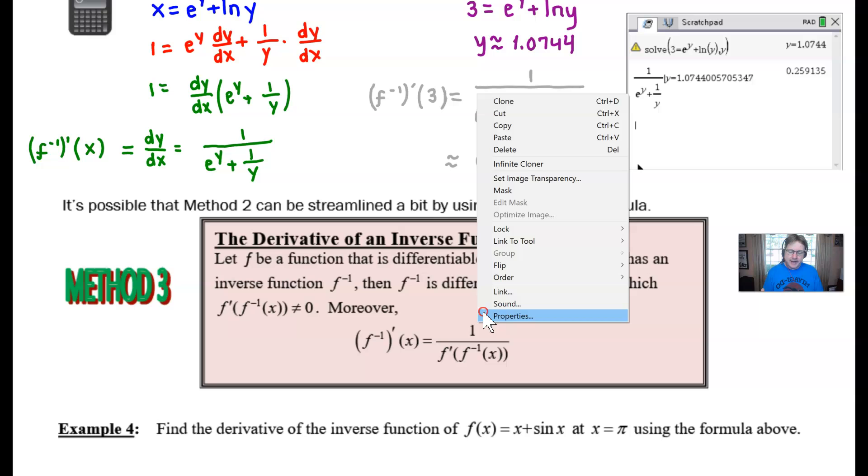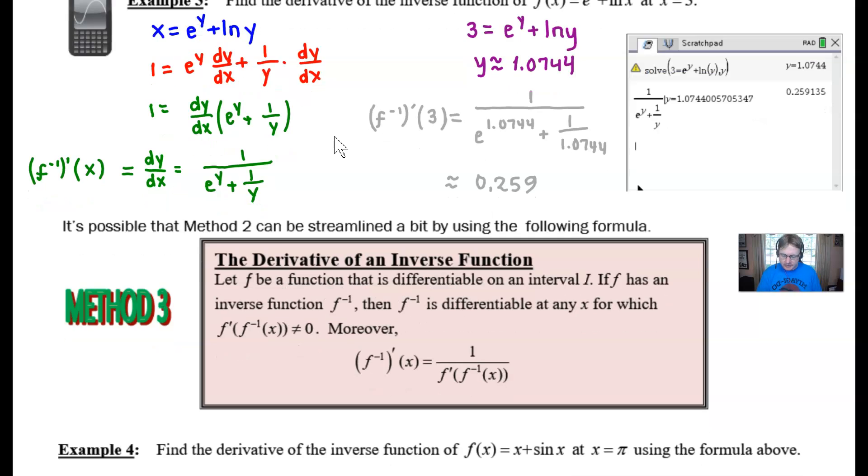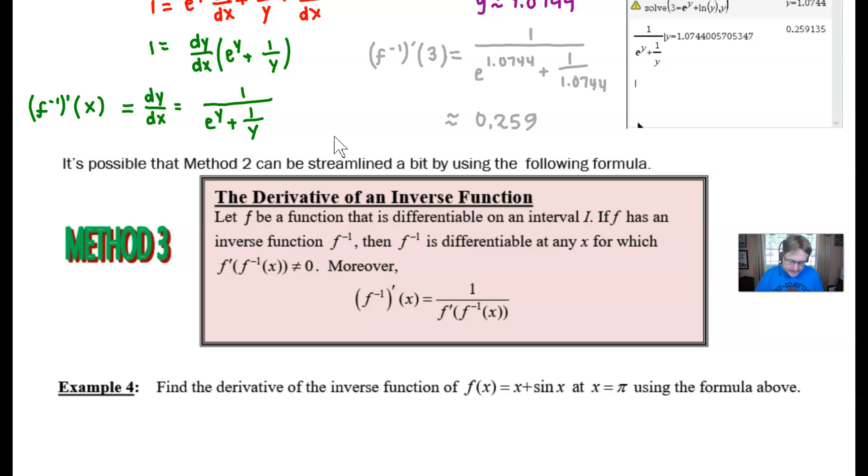We're supposed to find the derivative of the inverse function of f of x equal x plus the sine of x at x equal pi. Well, the first thing that we want to do is probably go ahead and consider the idea of having taken an inverse. In other words, we can go ahead and flip flop our x's for y's and write it like this. Now, this is about the only thing that this method has in common with our previous methods, because we're not going to take the derivative of both sides implicitly.